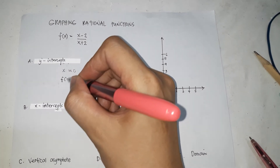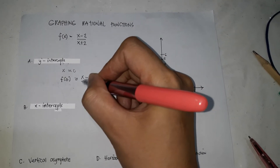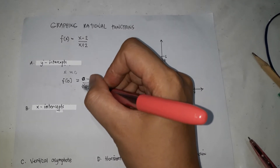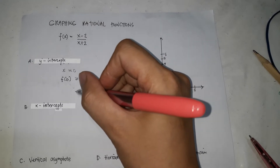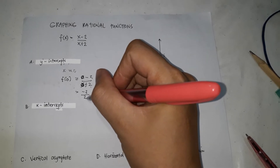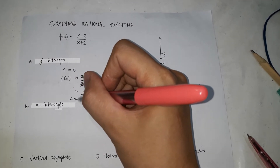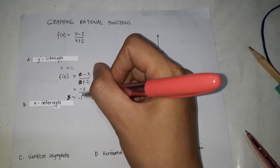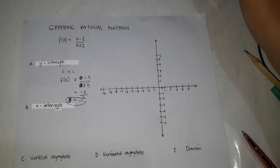So f of 0 is equal to x minus 2 over x plus 2. Substitute x with 0: we get 0 minus 2 over 0 plus 2, which is negative 2 over positive 2. Therefore, our y is equal to negative 1, because negative 2 divided by 2 is negative 1.